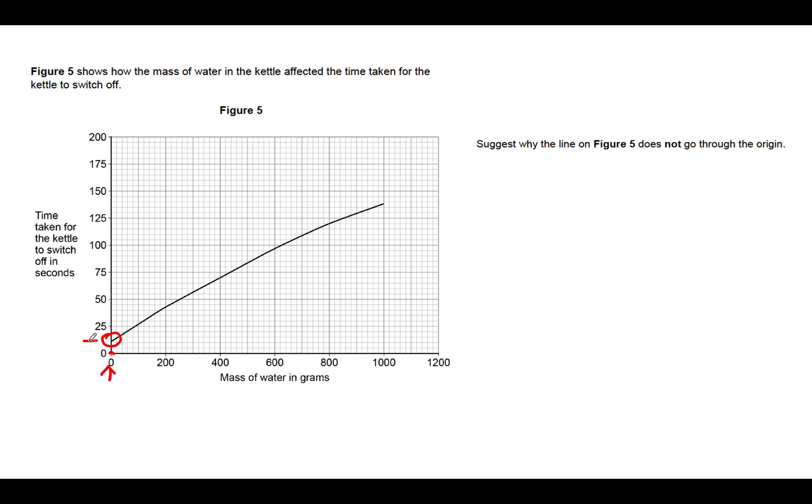Obviously, the origin is zero-zero. It doesn't go through the origin—when the mass of water is zero, it takes a certain time for the kettle to switch off. So when there's no water in the kettle and you switch it on—not a good idea—it takes a few seconds, according to this scale, something like 10 seconds to switch off. So why is that? Well, that's because the element needs time to heat up. When you see this word 'suggest,' this command word is expecting you to come up with any reasonable idea. It's not expecting you to have pre-learned that. The reason for that is the element takes a little while to heat up.